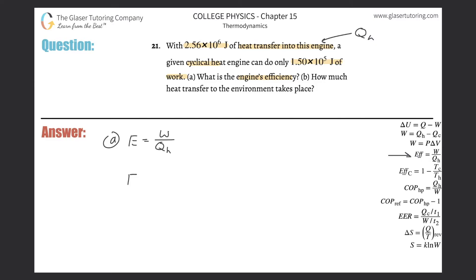Simply, we just have to find the ratio here. The amount of work done by the engine, 1.5 times 10 to the 5 joules, divided by the total energy supplied to that engine, which was 2.56 times 10 to the 6th.